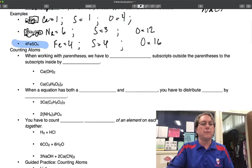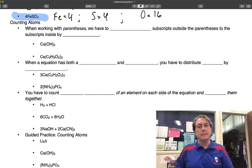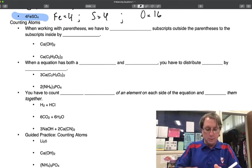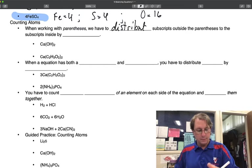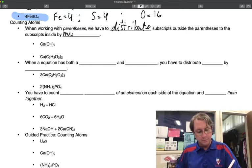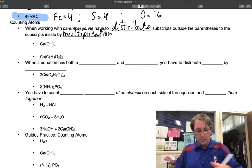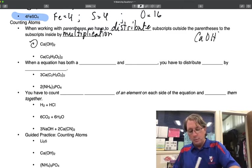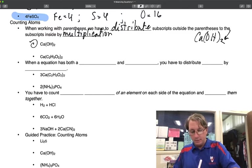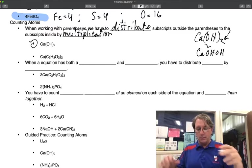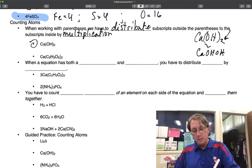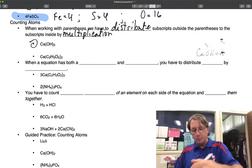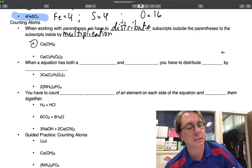The other complication you're going to find when counting atoms is working with parentheses. We're going to use something you're hopefully used to from algebra. We're going to distribute and we're going to use the operation multiplication. If you take the example here, Ca(OH)2, what this subscript means is OH, OH. It means that the OH section of that molecule repeats. There are two instances of it.